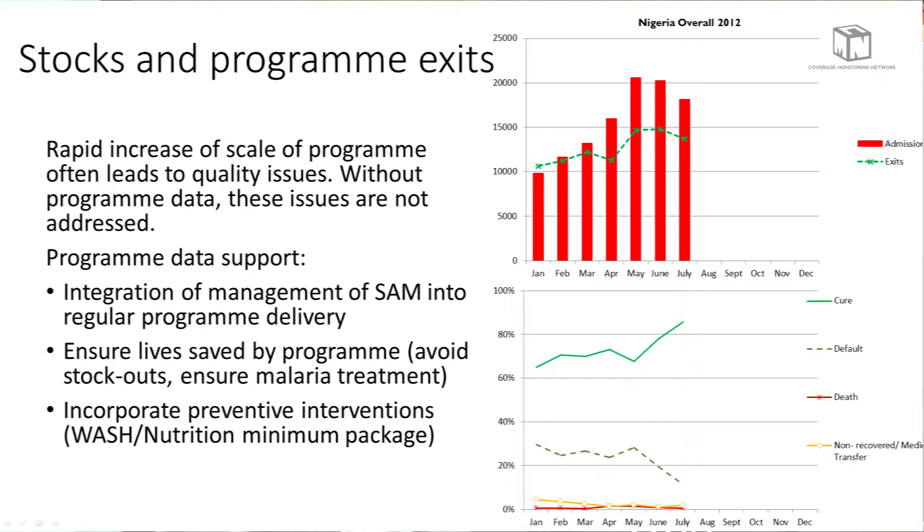Without program data, we do not address these quality issues. Correct reporting on the management of severe acute malnutrition will help integrate the program into regular healthcare delivery. The medical leadership in most countries does not buy into community-based programming, and they haven't taken on their appropriate role to make these programs take off. They need to be included in inpatient care and total program supervision to ensure ownership in country. Program data are also needed to make sure lives are saved, to avoid stockouts, and to treat children with anti-malarials and antibiotics where necessary.